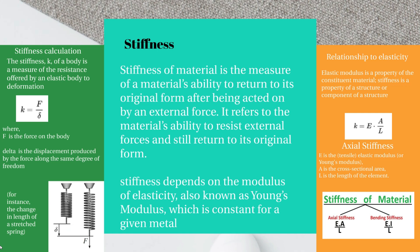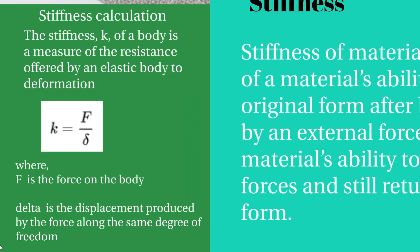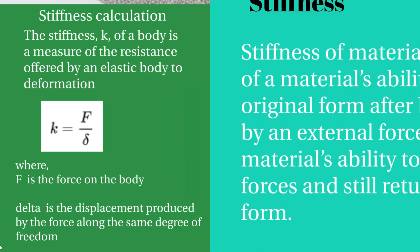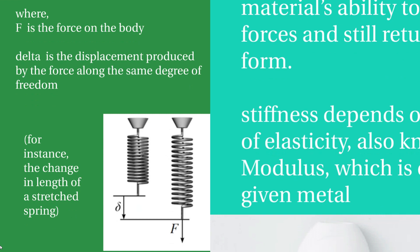Stiffness depends upon the modulus of elasticity, also known as Young's modulus, which is constant for a given metal. For stiffness calculation, k = F / δ, where k is the stiffness, F is the force on the body, and δ is the displacement produced by the force. For example, consider a spring loaded by a force where δ is the deflection — k, the stiffness of the spring, can be calculated from this.